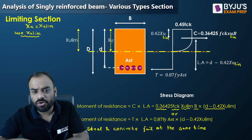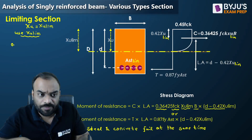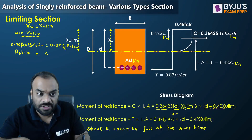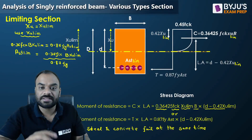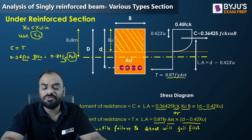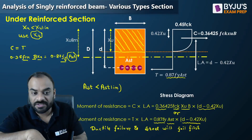To calculate the area of steel required for the limiting section, equate C force and T force: 0.36 fck × b × xu,lim = 0.87 fy × Ast,lim. Therefore, Ast,lim = (0.36 fck × b × xu,lim) / (0.87 fy). This is our Ast,limiting value. For the under-reinforced section, the area of steel provided is less than the Ast,limiting required, which is why it is called the under-reinforced section.